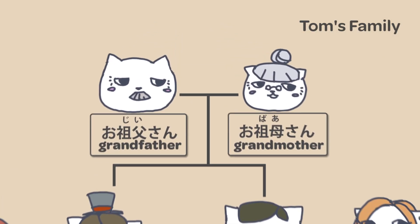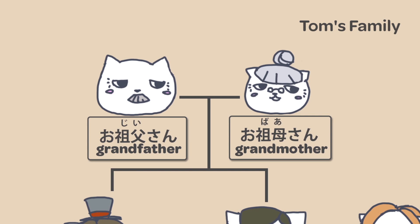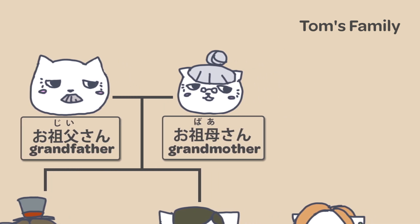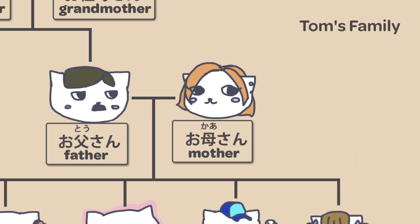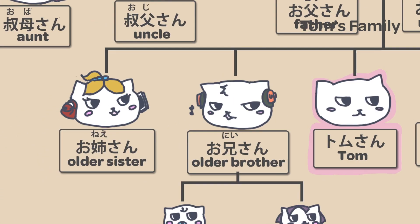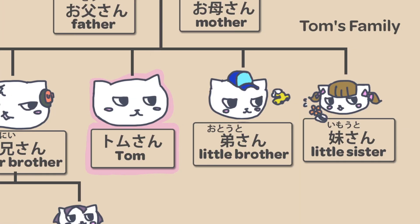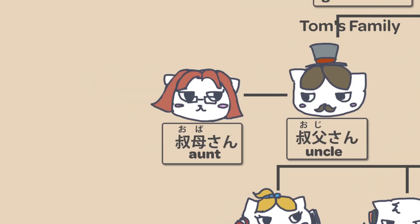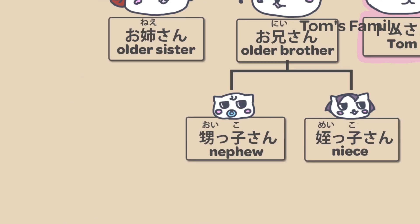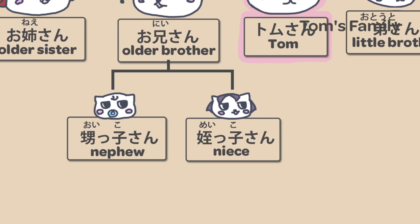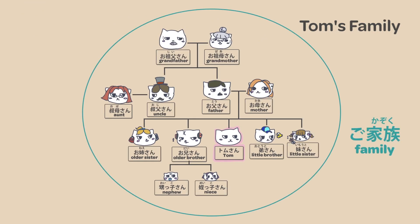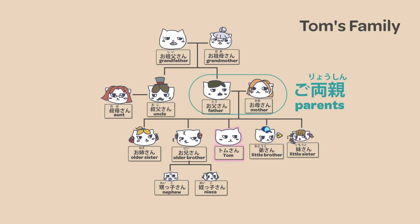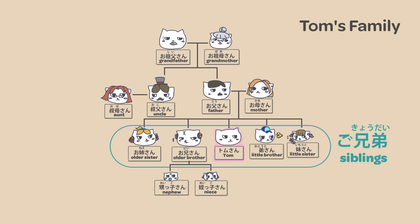So to talk about Tom-san's family members, for example, you need to say Tom-san-no: o-ji-san, o-ba-san, o-to-san, o-ka-san, o-ni-san, o-nee-san, o-to-to-san, i-moto-san, o-ji-san, o-ba-san, o-i-ko-san, me-i-ko-san. And also Tom-san-no: o-ka-zoku, o-ryoushin, and o-kyo-dai.